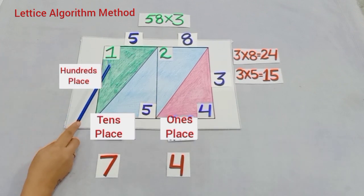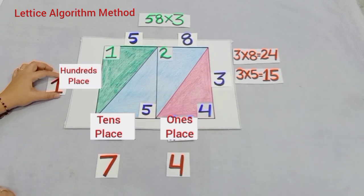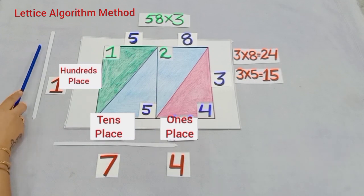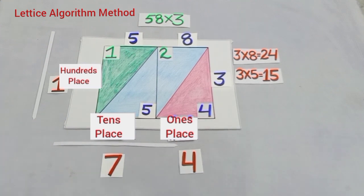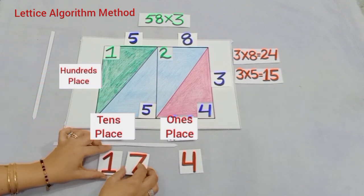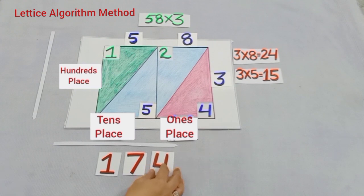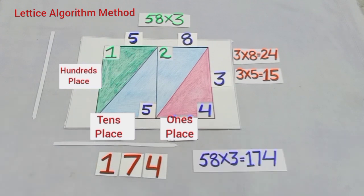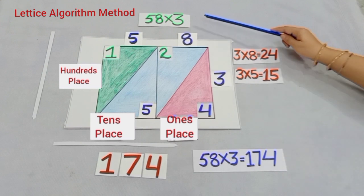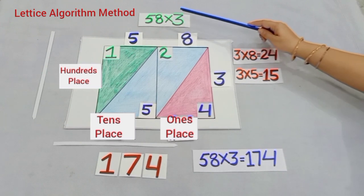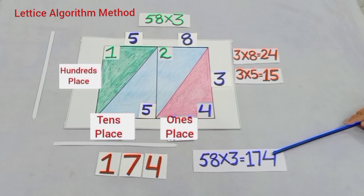And now, in the green area, we have digit one and we will place one at hundreds place. Now, to find the answer, we will combine these three digits like this. So, you can see we have one at hundreds place, seven at tens place and four at ones place. So, we will get the answer for our question, that is 58 into 3 is equal to 174.